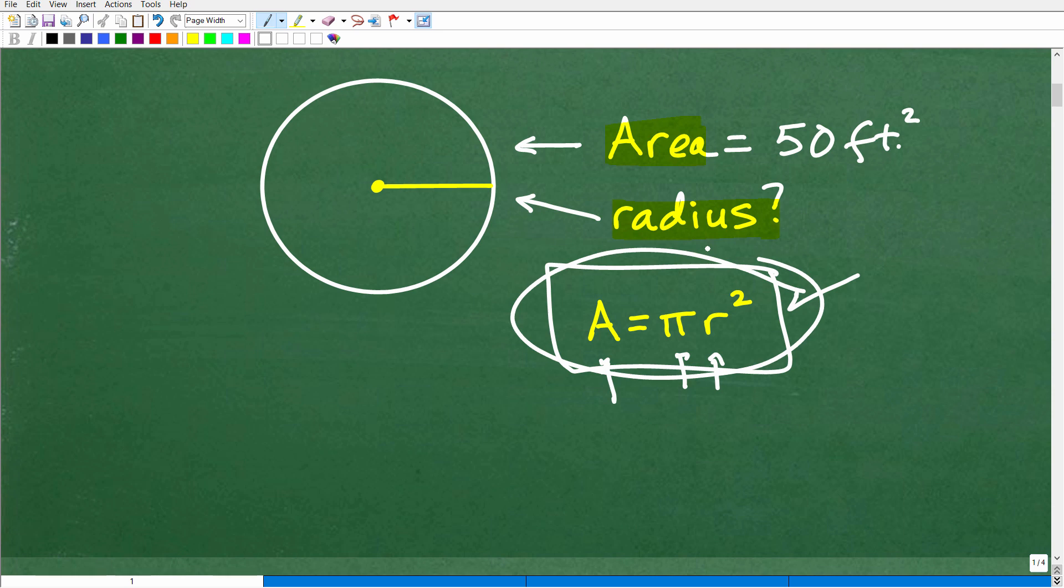But if you didn't know that, here is the formula. Now, I gave you the formula, which is really the secret to unlocking the solution here. So the area is equal to pi r squared.